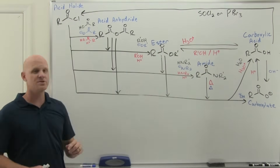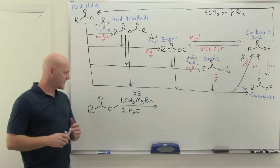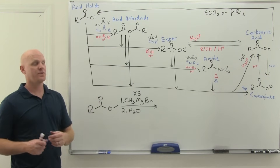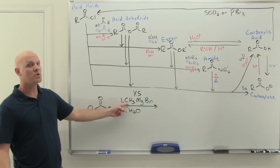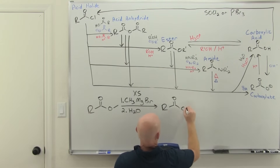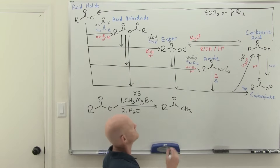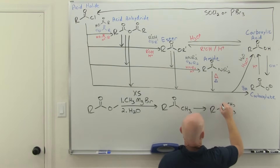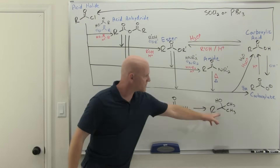Now let's review reactions with organometallics. With esters, you only need to worry about the Grignard reagent, because esters won't react with a Gilman reagent — no organocuprate reaction here. With the Grignard, you replace the leaving group — in this case the methoxy group — with the carbanion equivalent of your Grignard. This forms a ketone as an intermediate, but we're going to add excess Grignard. A second equivalent of Grignard reacts, and then the acid workup step gives you a tertiary alcohol.